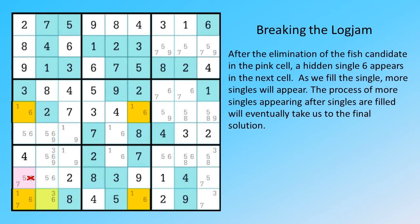After the elimination of the fish candidate in the pink cell, a hidden single 6 appears in the next cell. As we fill the single, more singles will appear. The process of more singles appearing after singles are filled will eventually take us to the final solution.